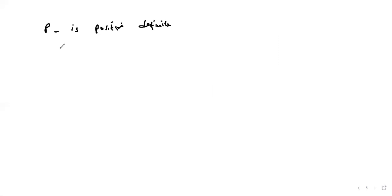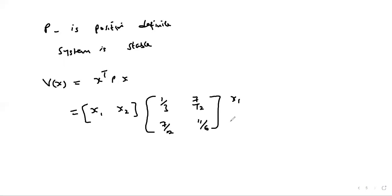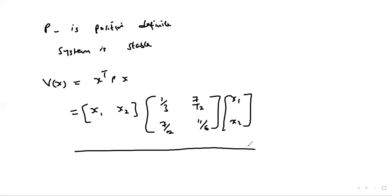Since matrix P is positive definite, the system is stable. A Lyapunov function exists for our system defined by V(x) = xᵀPx, which in our case is [x₁, x₂] × [1/3, 7/12; 7/12, 11/6] × [x₁, x₂]ᵀ. Therefore our system is stable, and that is the Lyapunov stability criterion, used especially for nonlinear systems.